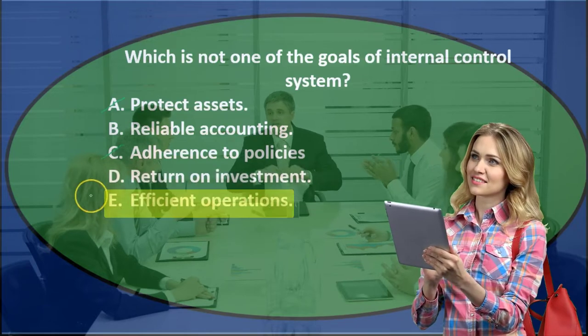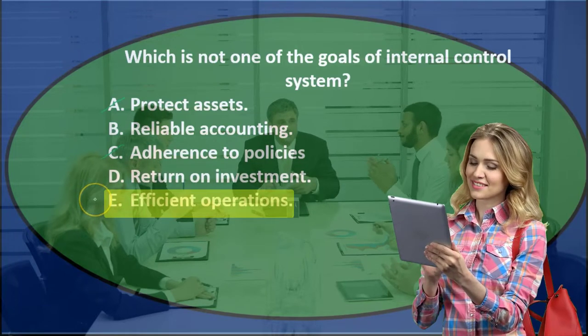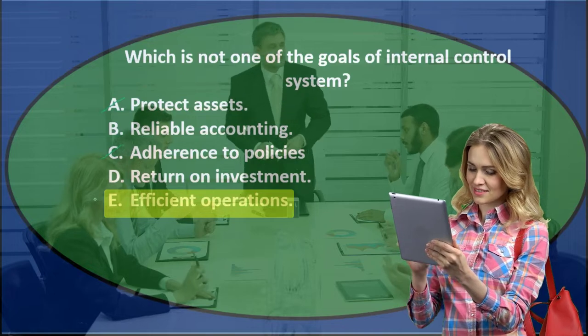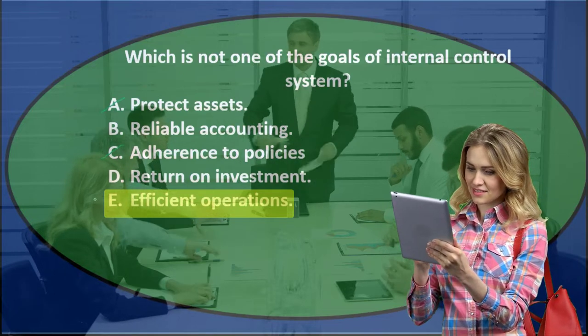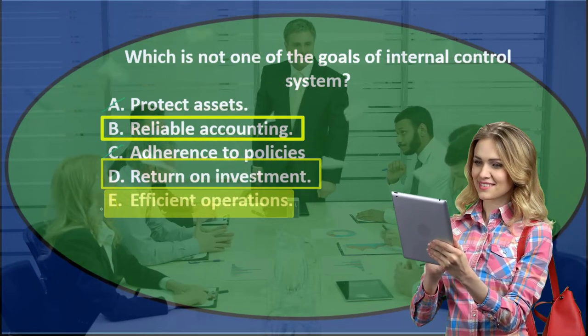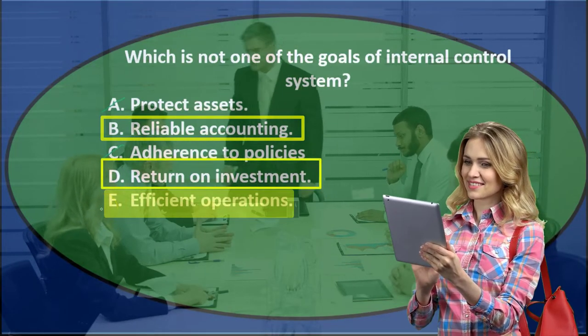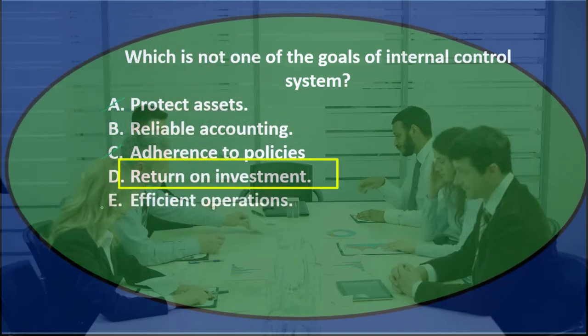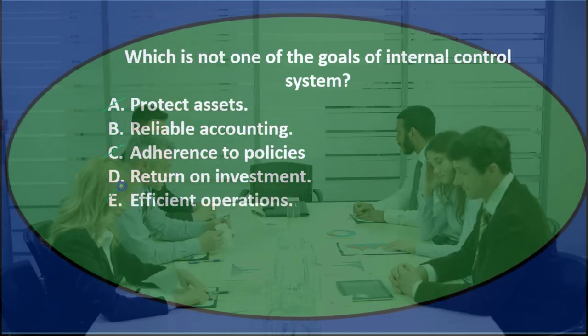E says efficient operations. I would think that internal controls would be a form of system we're trying to put in place to have efficient operations. So I'm going to cross that out.